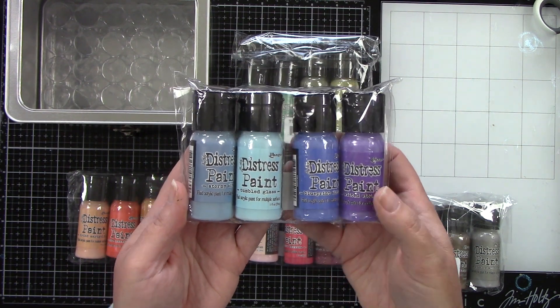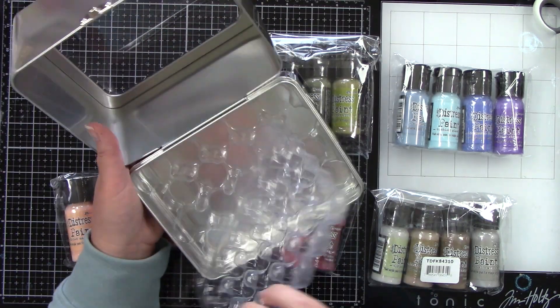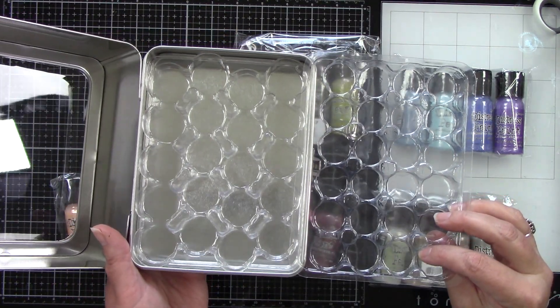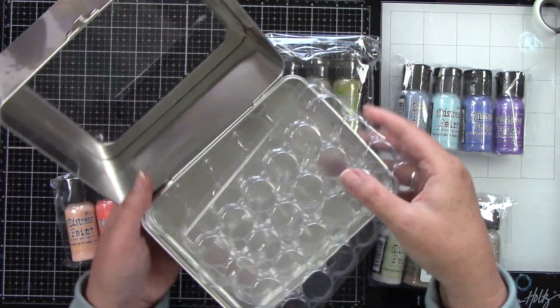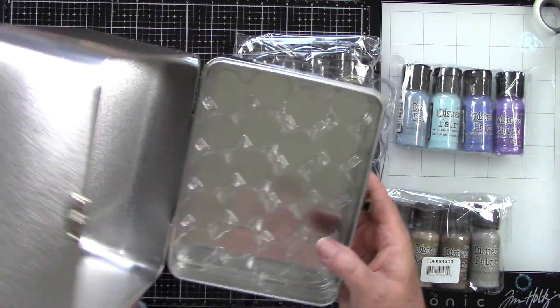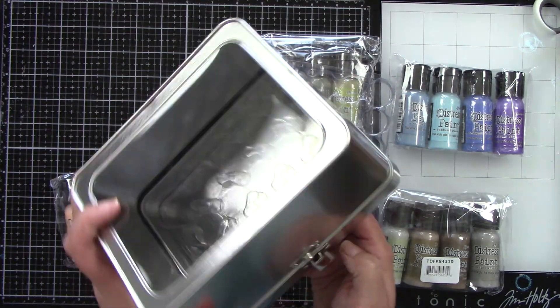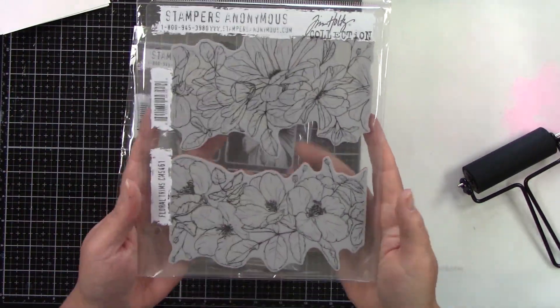Then we have this storage container. This is the tin. It's an interchangeable insert that allows you to store 24 distress reinkers, 20 distress paints, or 20 distress mini sprays. And you guys can get this as a bundle. Scrapbook.com right now is shipping all of this out and you can get this in a bundle. And I have everything listed and linked for you guys below.